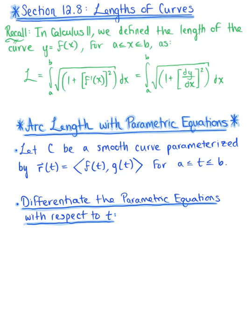In section 12.8, we are looking at lengths of curves. To begin, recall that back in Calc 2, we defined the length of a curve y = f(x) on a closed interval from a to b using the definite integral: the integral from a to b of the square root of 1 plus the derivative of our curve squared, dx. In this section, we use a similar method to find the length of a curve parametrized by a vector-valued function r(t) on a closed interval from a to b.